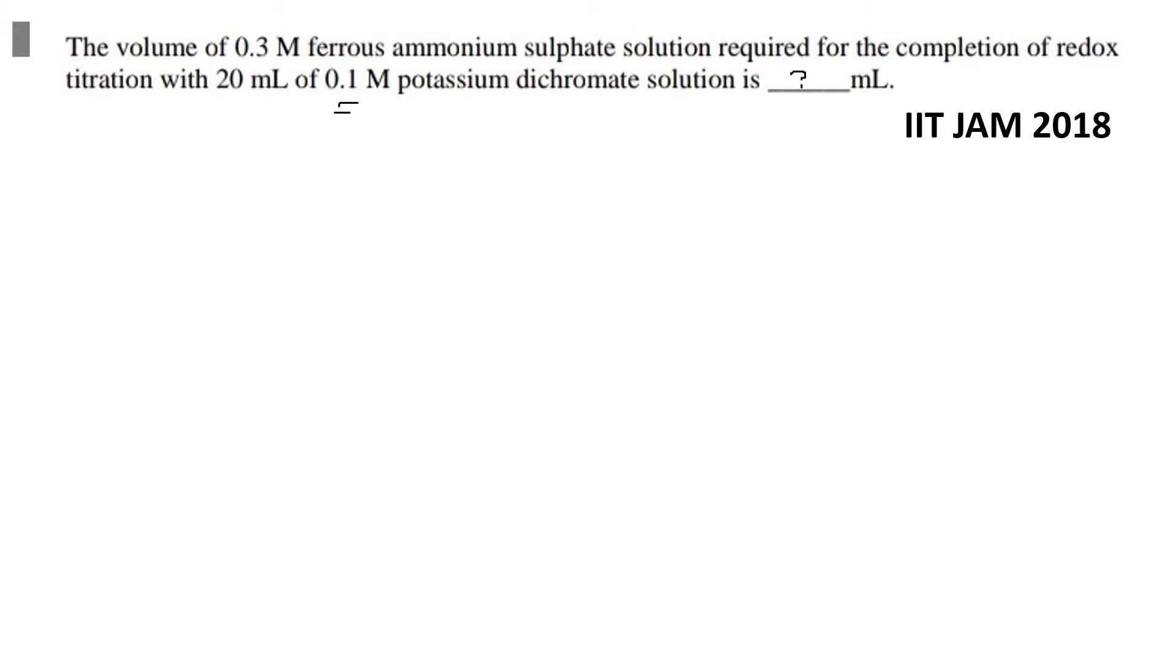What is the question? Potassium dichromate solution is given, and we have treated it with ferrous ammonium sulfate solution. First of all, we will write a balanced chemical reaction, then we will proceed with the numerical solution.